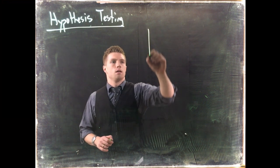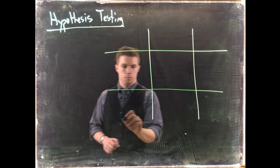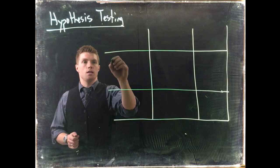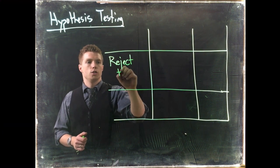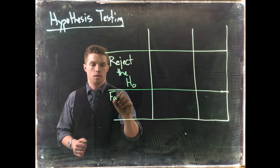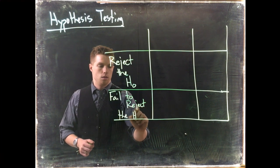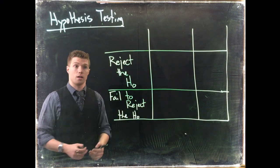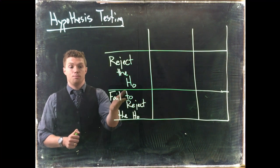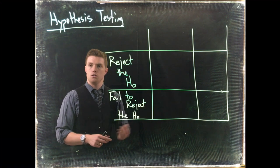Let me put up a little bit of a grid for you. Consider the following — we have these possible outcomes whenever we do our hypothesis testing. When we do hypothesis testing, we can either reject the null hypothesis or we can fail to reject the null hypothesis. We're either trying to reject the null hypothesis and support our alternative hypothesis, or we collect insufficient data and conclude that we fail to reject the null hypothesis.